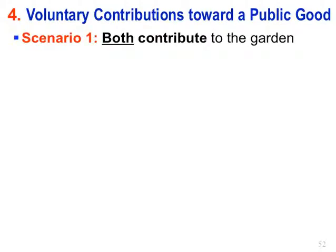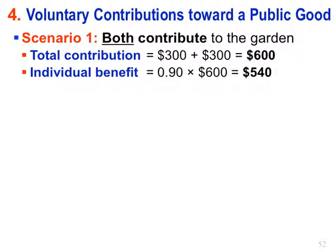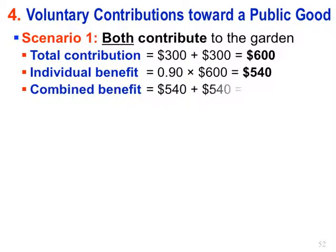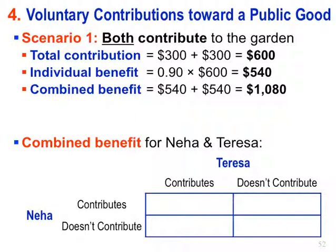So we want to figure out: let's consider the scenario in which both contribute to the garden. This was actually described in the question — you weren't asked this, this information was already given to you. If they each contribute their $300 to the garden, the total contribution will be $600. The individual benefit for every dollar contributed is 90 cents, so the individual benefit will be 90% of $600, or $540. The combined benefit for Neha and Teresa will be $1,080. That's the upper left box in the matrix.